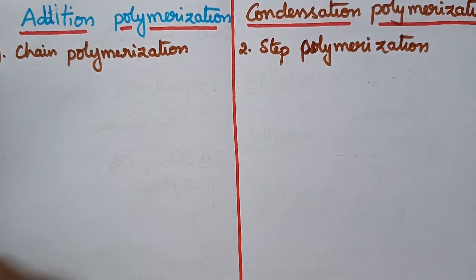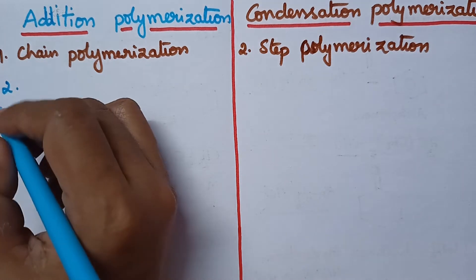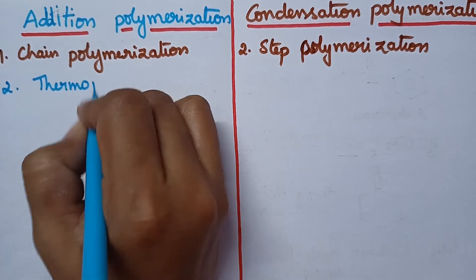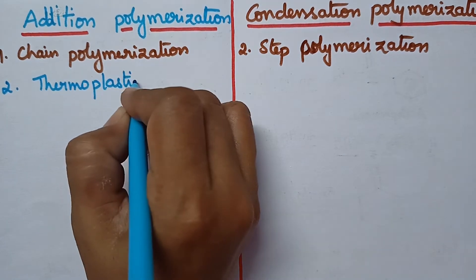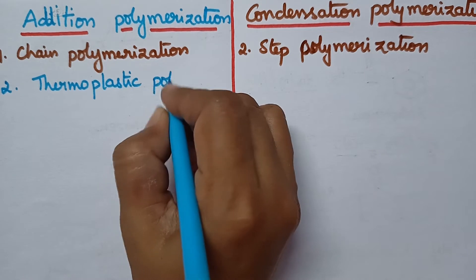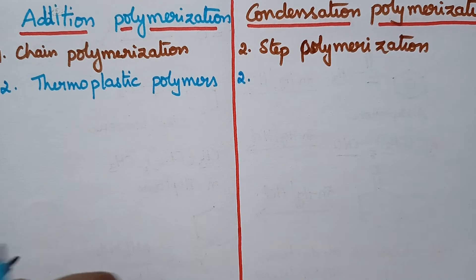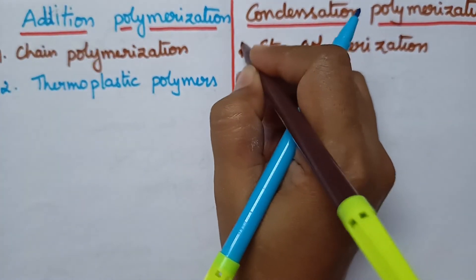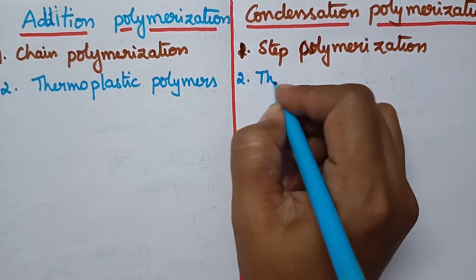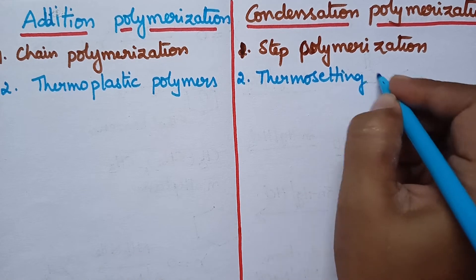In general, addition polymerization results in the formation of thermoplastics, so it is possible to prepare thermoplastic polymers through addition polymerization. Whereas condensation polymerization involves the formation of thermosetting polymers.